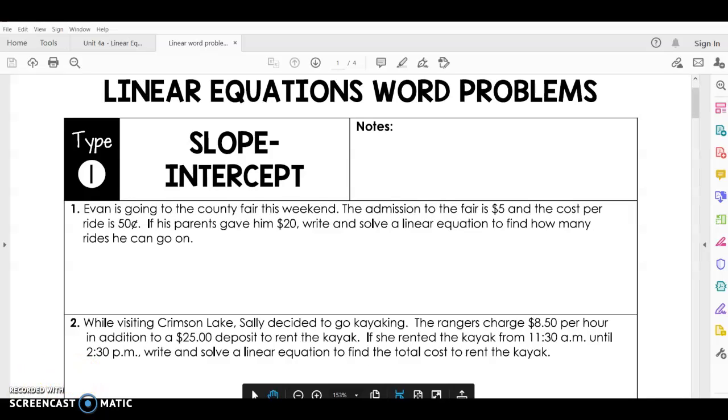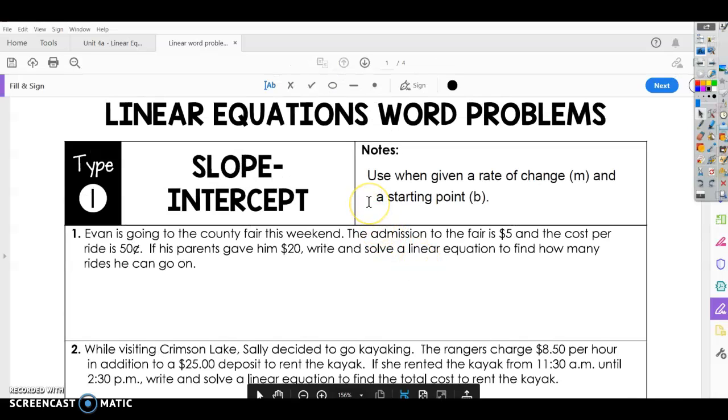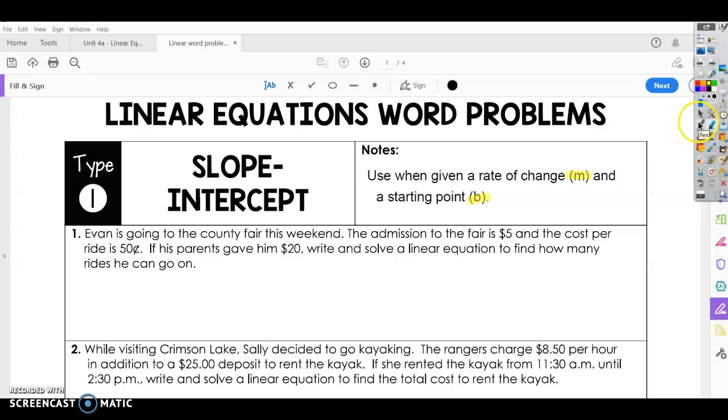So the first thing is we're going to look at what we need for slope-intercept. In your notes, go ahead and put that you can use when given a rate of change, which is your m, and a starting point b. So if you're given a slope and a b, you can use slope-intercept form.